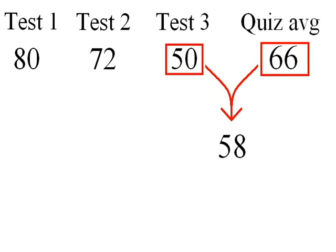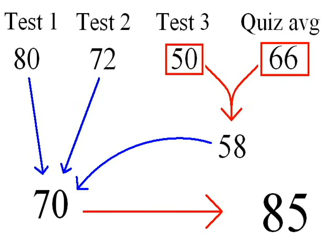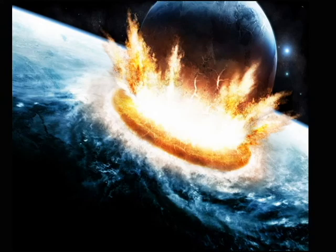Then that number and the two other test grades are averaged for the raw grade, and then you take half and add 50 and end up with 85. So it's not the end of the world anyways.